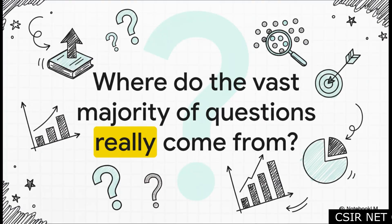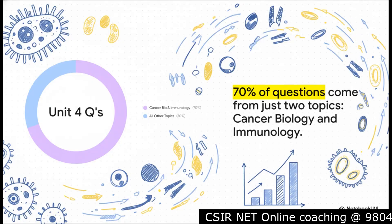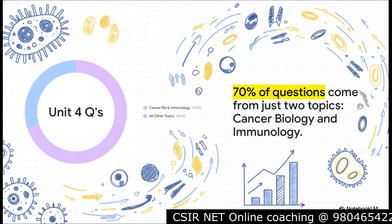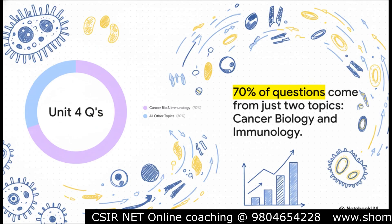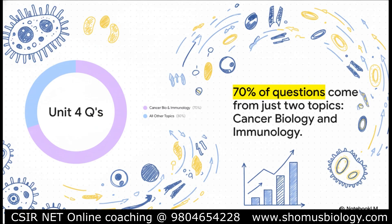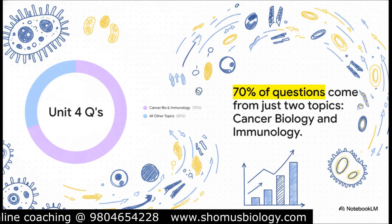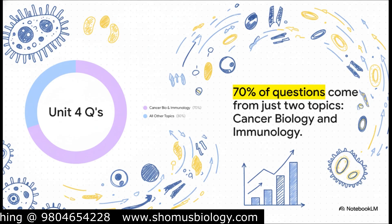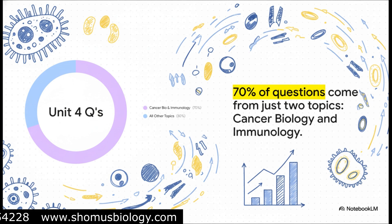So with five gigantic topics to choose from, where do the examiners actually put their focus? Where are the marks really hiding? Here it is — the 70% rule in action. Just look at this chart. A whopping 70% of all the questions from Unit 4 come from just two topics: cancer biology and immunology. Just let that sink in. Out of five massive subjects, only two account for the vast majority of the marks. This single piece of data is the foundation of our entire strategy. If you want to maximize your score, your focus absolutely has to start here.